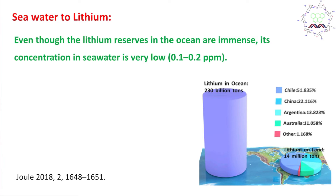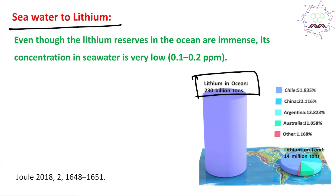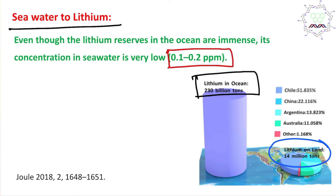The third option is seawater-to-lithium. Our oceans have a huge amount of lithium resources — approximately 230 billion tons — compared to only 14 million tons of land-based reserves. However, the concentration of lithium in seawater is very low, which is why it is not yet economically profitable. We expect that in the future this technology will be improved, so the environmental impact will be less.